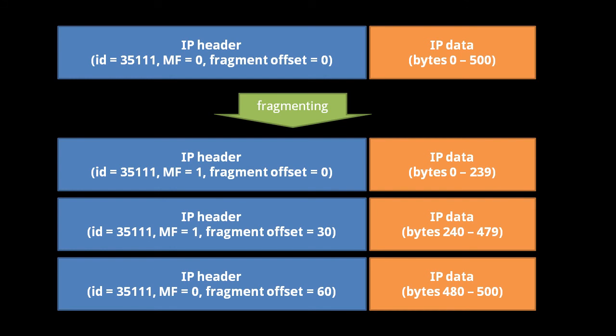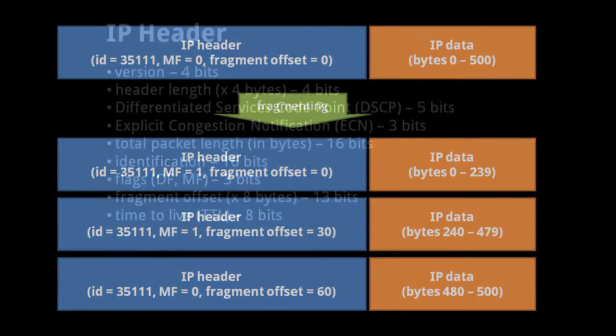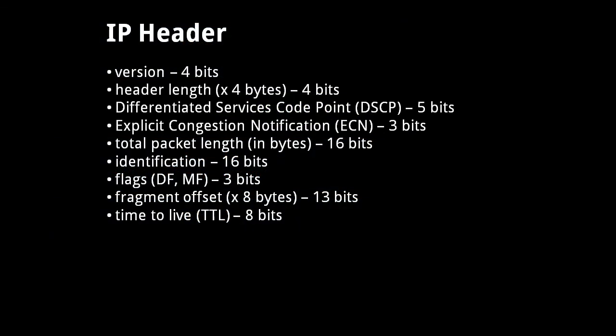So when a host receives each of these fragments, it has the information it needs to piece them back into the original packet and also knows when it has all of the fragments. After the ID, flags, and fragment offset, we have the TTL — time to live — field.